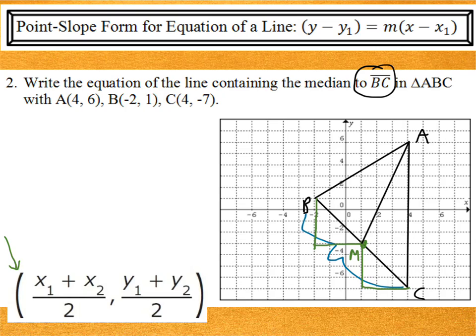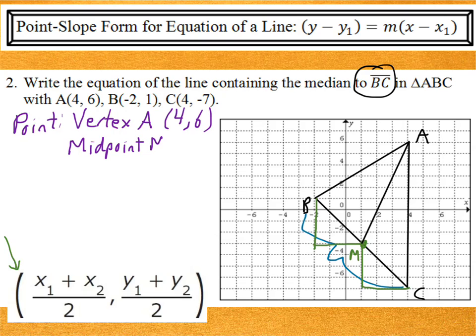So, now let's figure out the equation. What point would I use? Well, I've actually got two choices. I can use the vertex A, which is at 4, 6. Or, I could use the midpoint M, which is at 1, negative 3. Both points are on the segment, so I could choose either one of them. What about the slope?